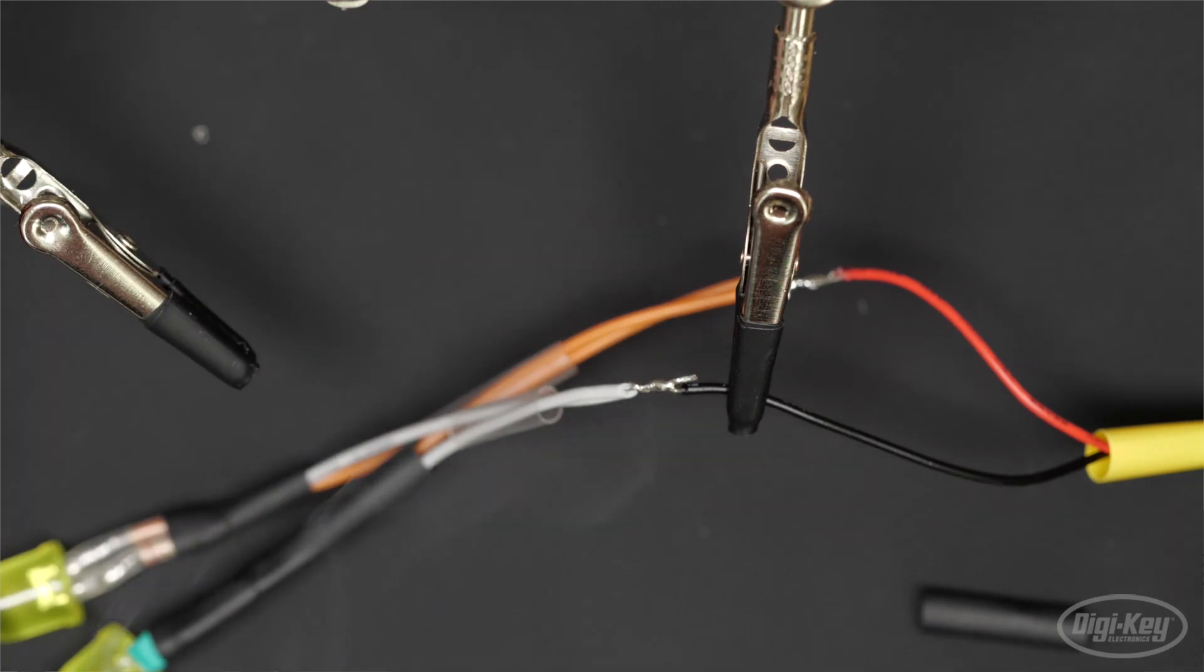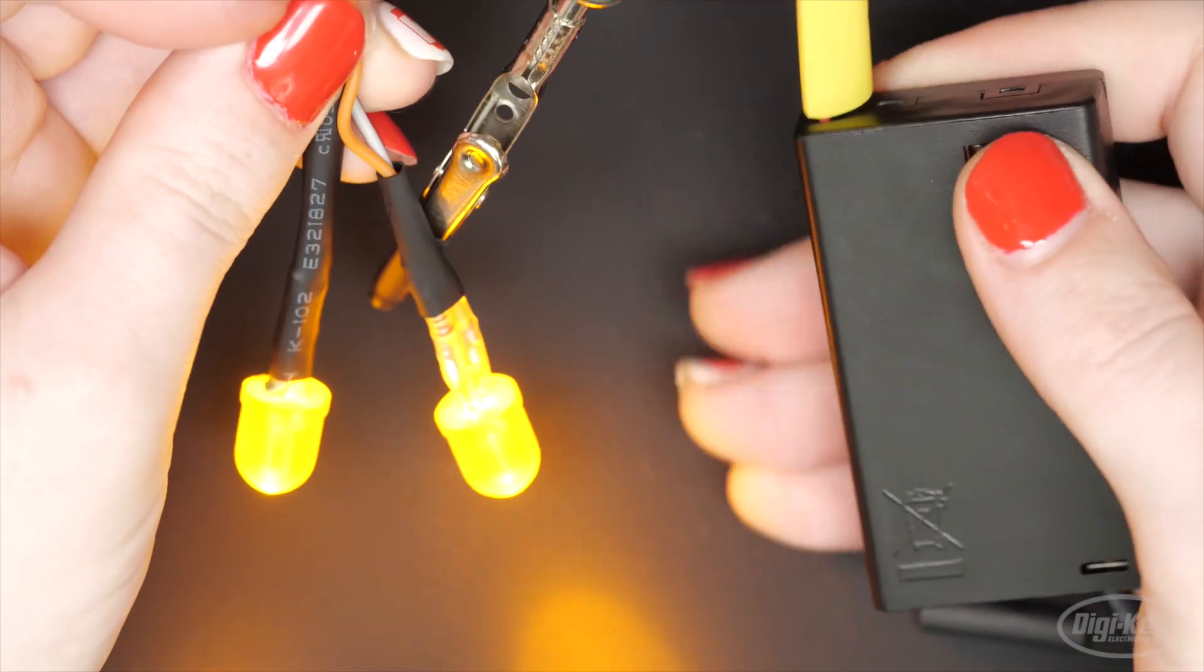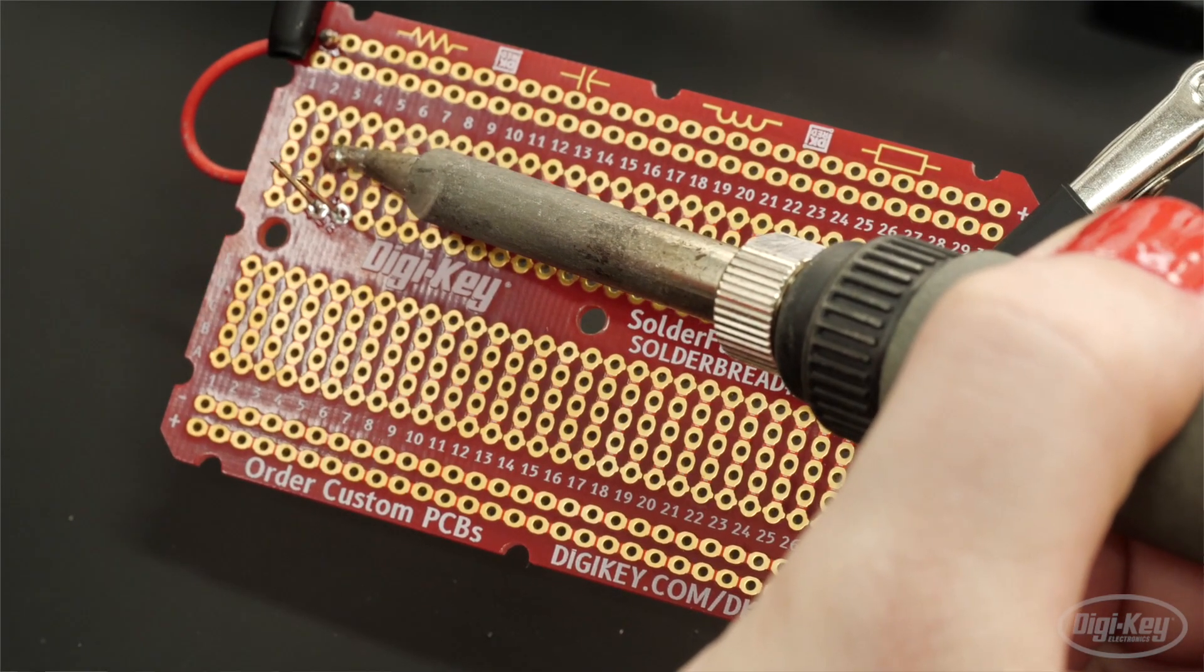If you're new to soldering, practice making a few simple circuits with LEDs and battery packs. Then, you can level up to building a soldered version of your latest breadboard project on a piece of protoboard.